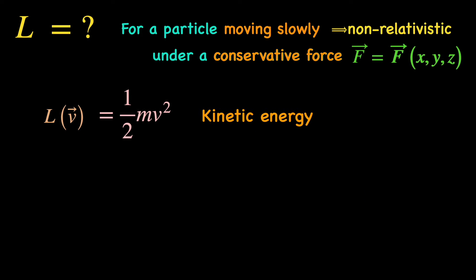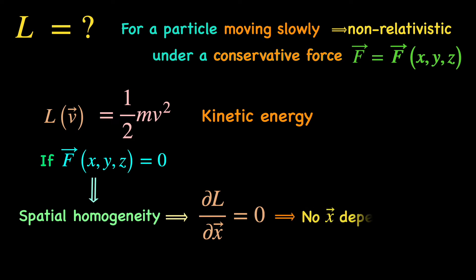So, if there is no conservative force acting on the particle, space appears homogenous to it, so its Lagrangian cannot depend on any of the spatial coordinates and only depends on the velocity through the kinetic energy. Since there is no force acting, this is called a free particle Lagrangian.